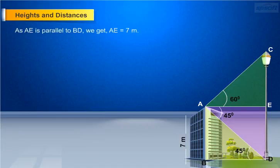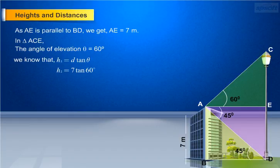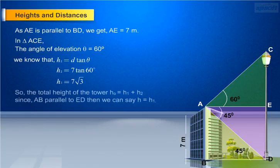As AE is parallel to BD, we get AE equals 7 meters. In triangle ACE, the angle of elevation theta equals 60 degrees. We know that H2 equals D tan theta. This implies H2 equals 7 tan 60 degrees. As tan 60 degrees equals root 3, we have H2 equals 7 root 3.